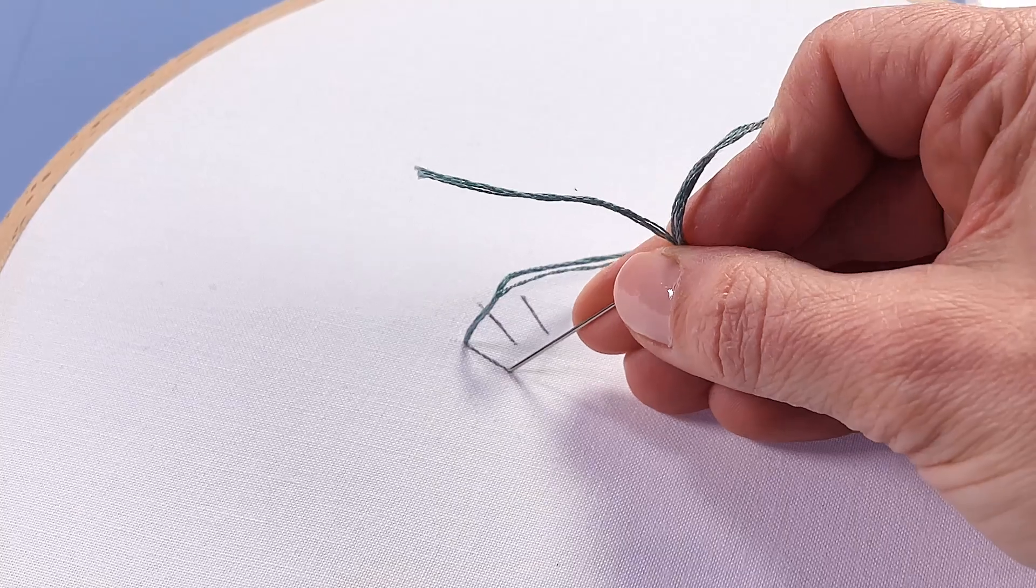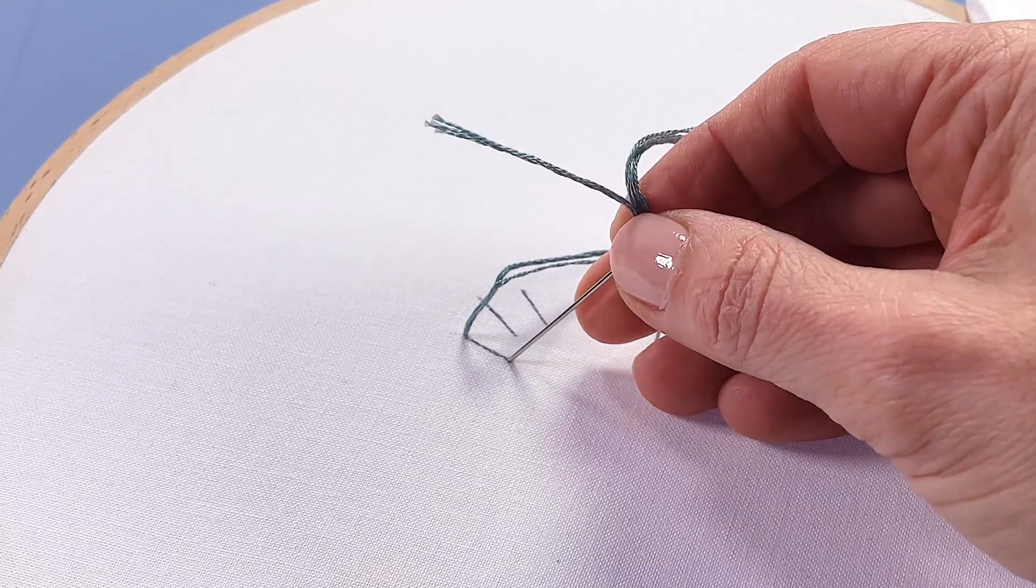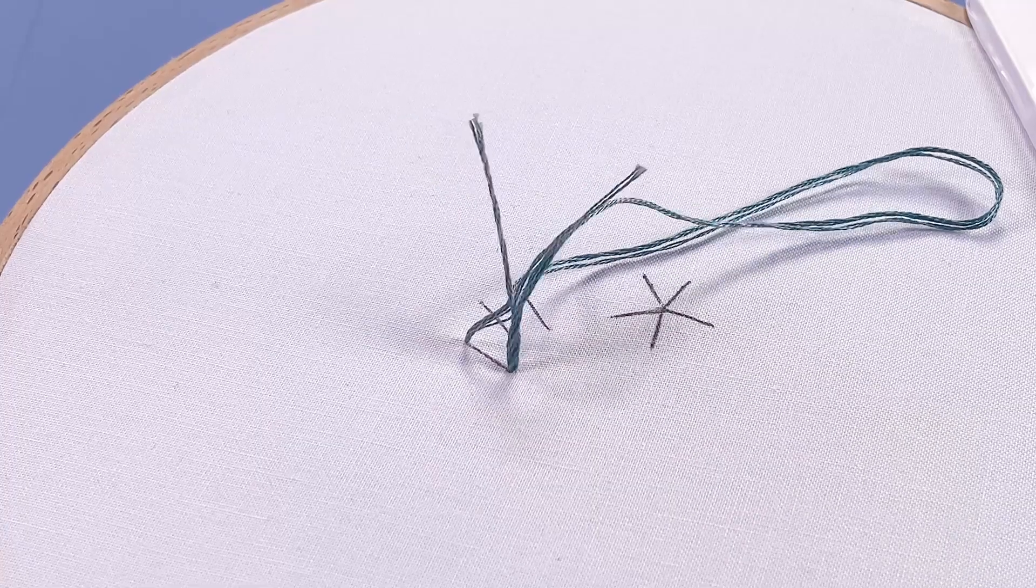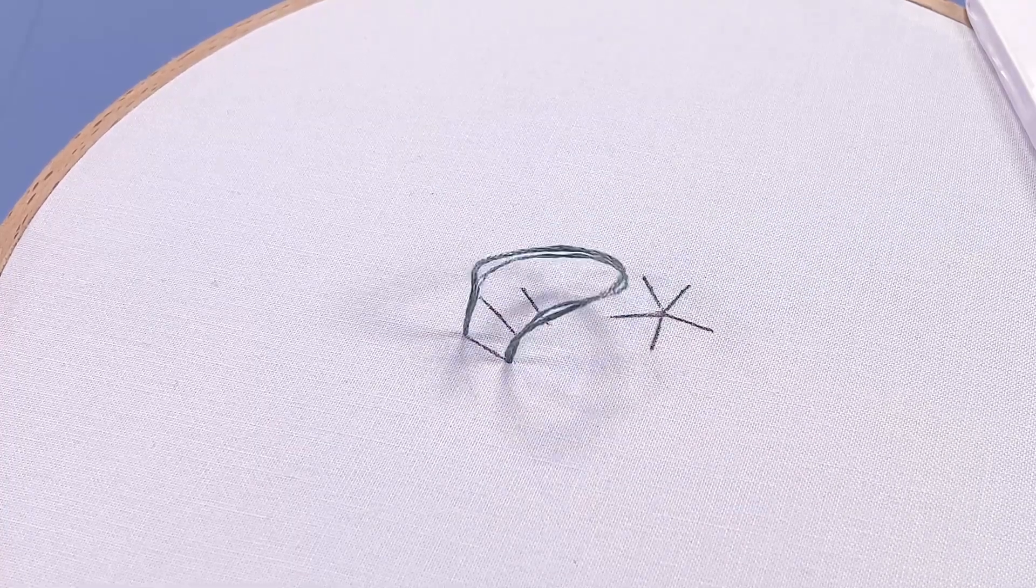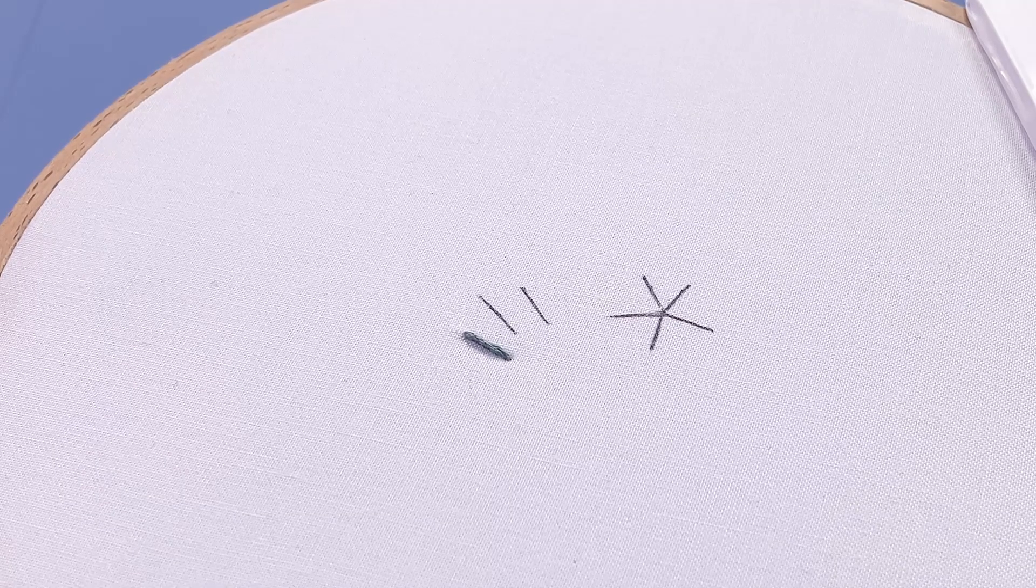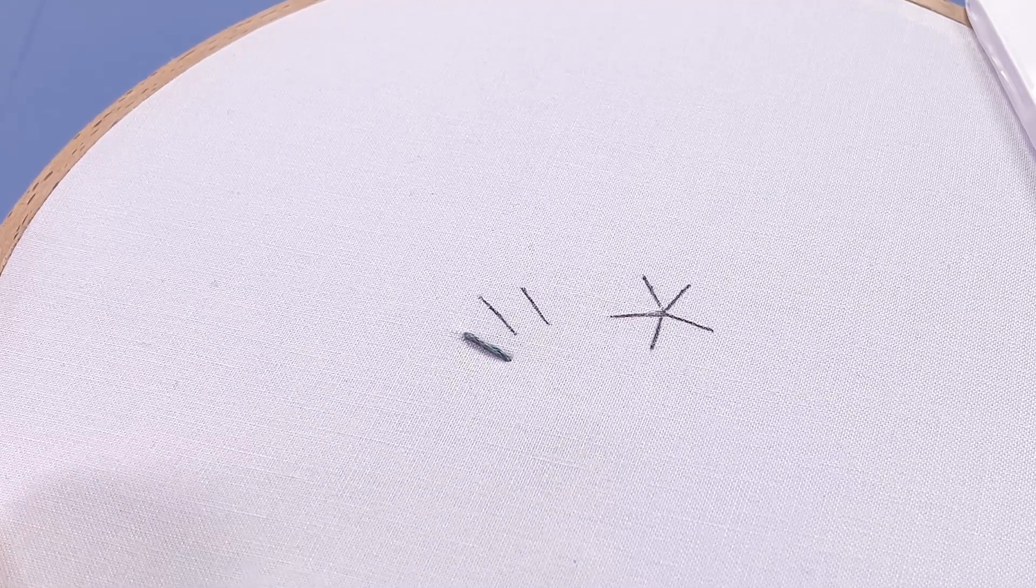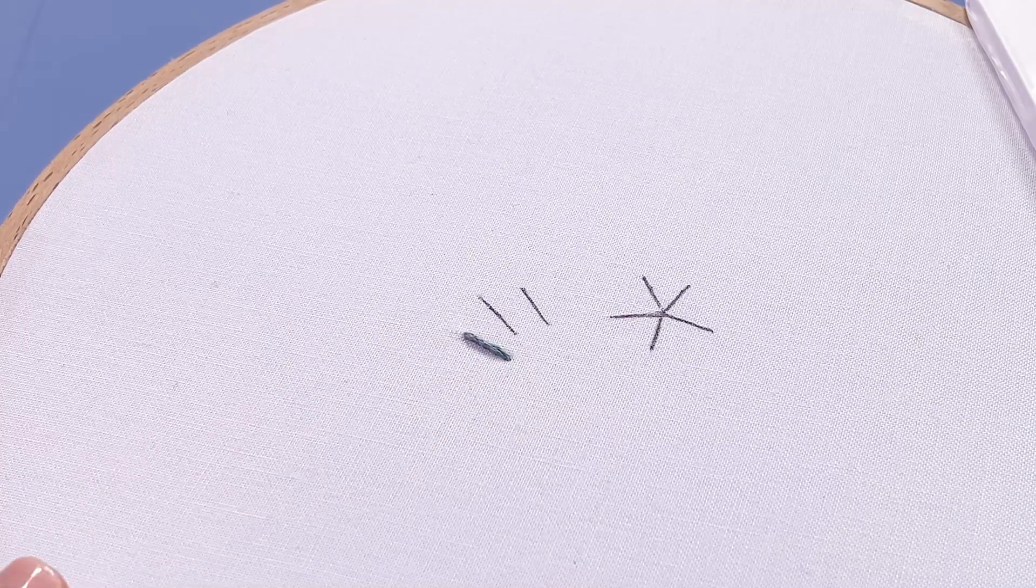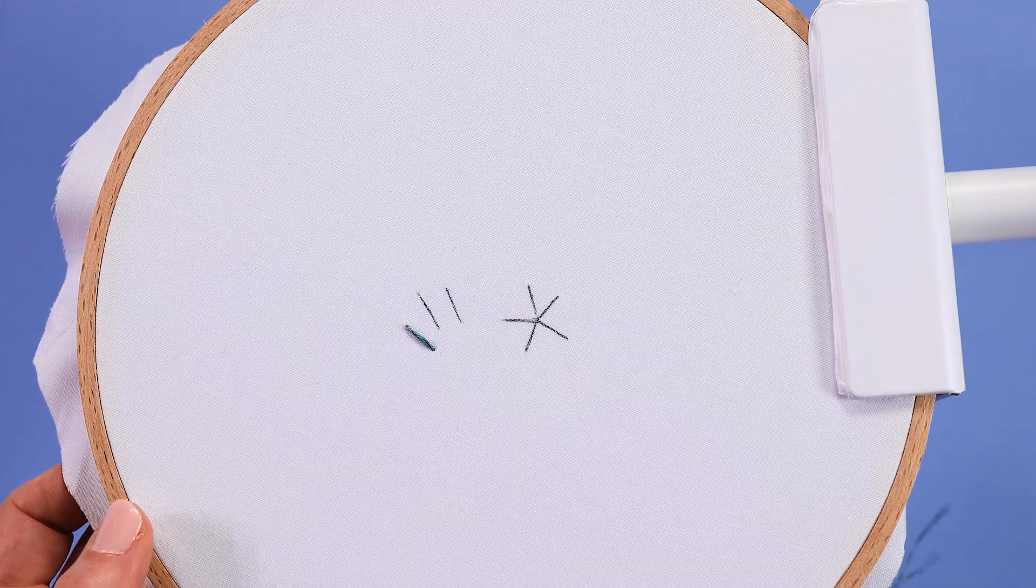Now poke your needle down at the end point of the first stitch and then reach under and slowly draw your needle and all the working thread through to the back. You only need to be really gentle as you pull the stitch flat. You don't need to pull it super tight. And then what do you know? You've made your first stitch.